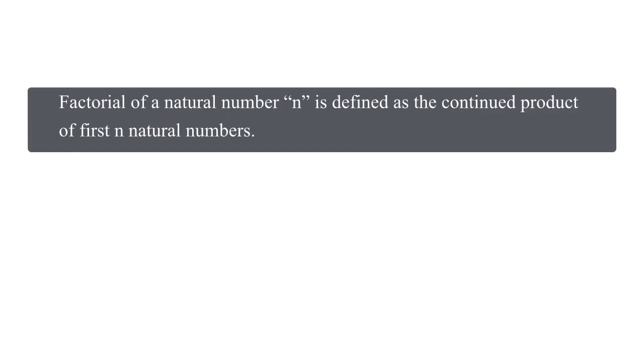But we still don't know what factorial of a number means. So let's move to the definition part. The definition says, factorial of a natural number n is defined as the continued product of first n natural numbers. Now this definition tells us how to find the factorial of any natural number.